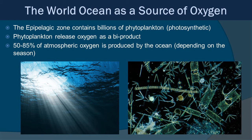The epipelagic zone contains billions of phytoplankton, which is really important because phytoplankton release oxygen as a byproduct. We estimate that 50 to 85% of the atmospheric oxygen is produced by the ocean, depending on seasonalities — that's a huge contribution to our atmosphere and to what we need to breathe.